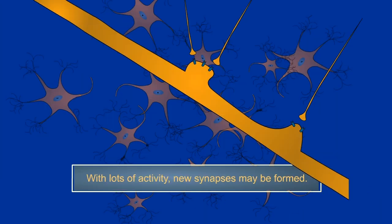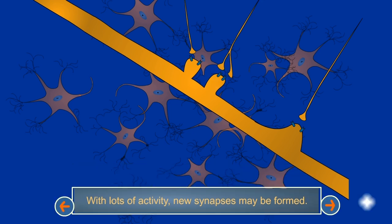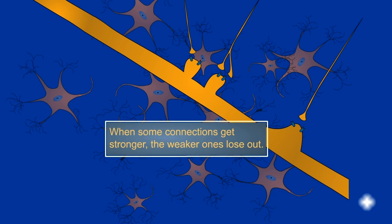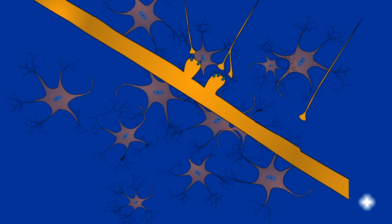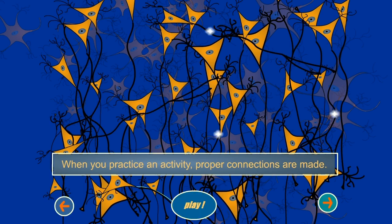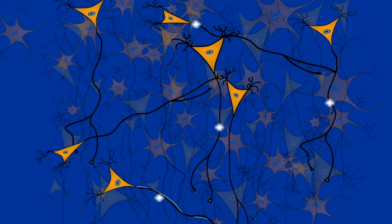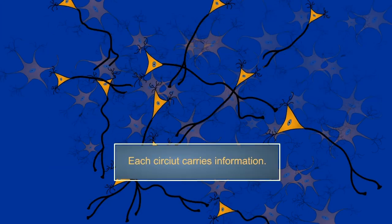With lots of activity, new synapses may be formed. Some connections get stronger. Weaker ones lose out. This requires changes in gene expression. When you practice an activity, proper connections are made. The circuit carries information.